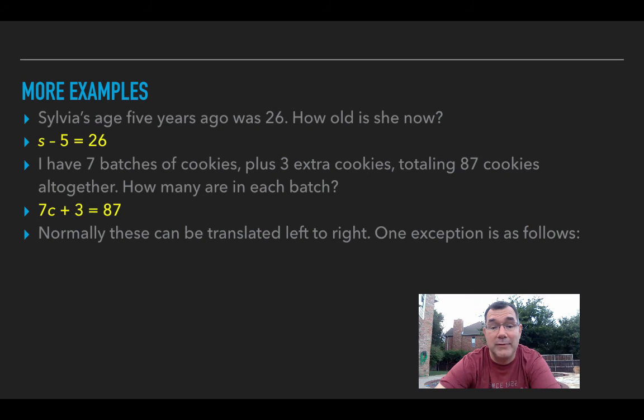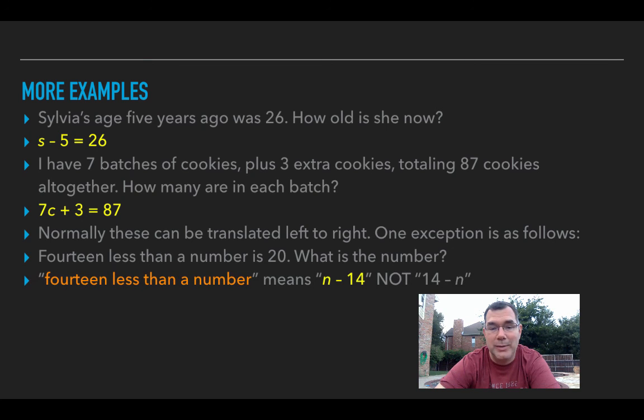Normally, these can be translated from left to right, but as I mentioned in an earlier video, there's one exception, and it's when I say something like less than. Fourteen less than a number is 20. What's the number? I don't do 14 minus n, because that wouldn't mean the same thing. It's going to be n minus 14, not 14 minus n. That means that n minus 14 equals 20.